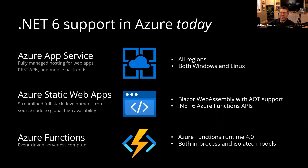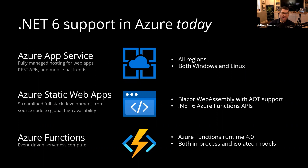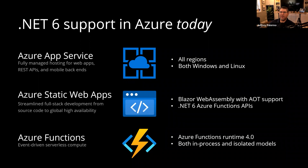Every part of Azure supports .NET 6 right now. You don't have to worry about particular regions not having support for .NET 6. If you're using pre-release of .NET 7, you do have to worry about that because that's not the case. But .NET 6 is basically supported everywhere. Azure Pipelines is keeping up, GitHub Actions is keeping up, and every service in Azure is keeping up — so you don't have to worry about that.